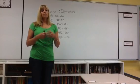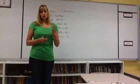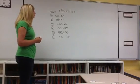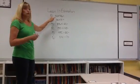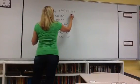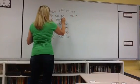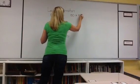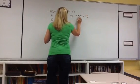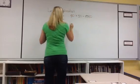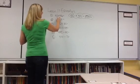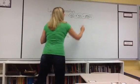I recommend front-end estimation and I'll show you what I mean. The first problem is 52 times 46, and so 52 could round to 50 or it could round to 60 and it's closer to 50. So I would say 50 times 50. 5 times 5 is 25, so 50 times 50 is 2500. I know my answer is going to be around 2500.